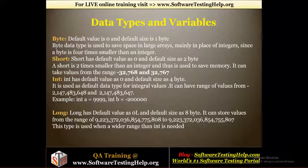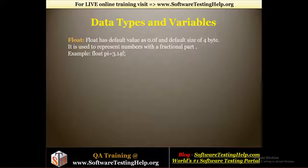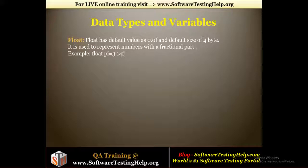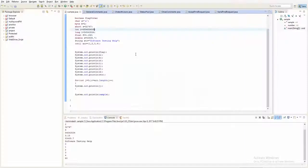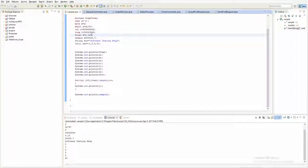Float has a default value of 0.0f and default size of 4 bytes. It is used to represent numbers with a fractional part — for example, the pi value 3.14, which has a fractional point. To store such values you simply declare a float variable accordingly.